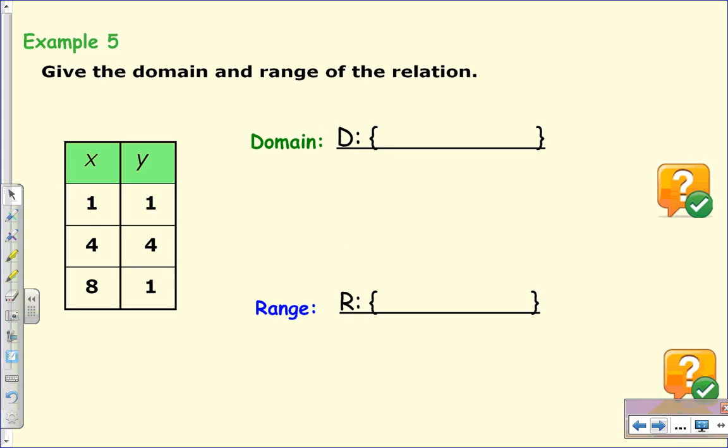Okay, so we've looked at a graph, we've looked at a mapping. Now, we're given a table of values. Can you list the domain? Again, in numerical order, we have 1, 4, and 8. Now, the range is something special. What are all the possible values? Well, you notice 1 is repeated twice. So one possible value for the range is 1, and then the other possible value is 4.